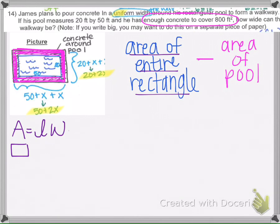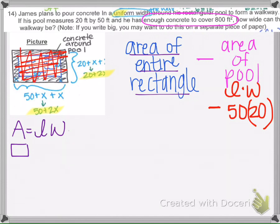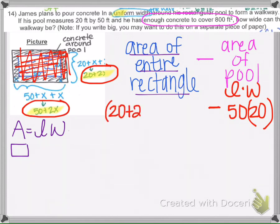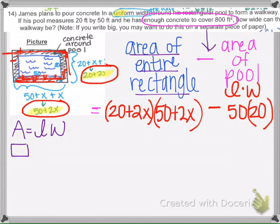The area of a rectangle is length times width. The area of the pool is 50 times 20. For the whole rectangle, we multiply the (20 + 2x) side by the (50 + 2x) side. So: area of whole rectangle minus area of pool equals the concrete. That gives us (20 + 2x)(50 + 2x) minus (50 × 20) = 800 square feet.